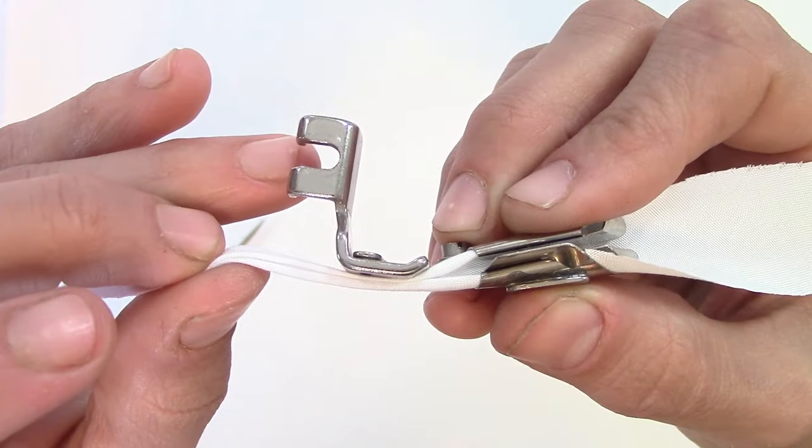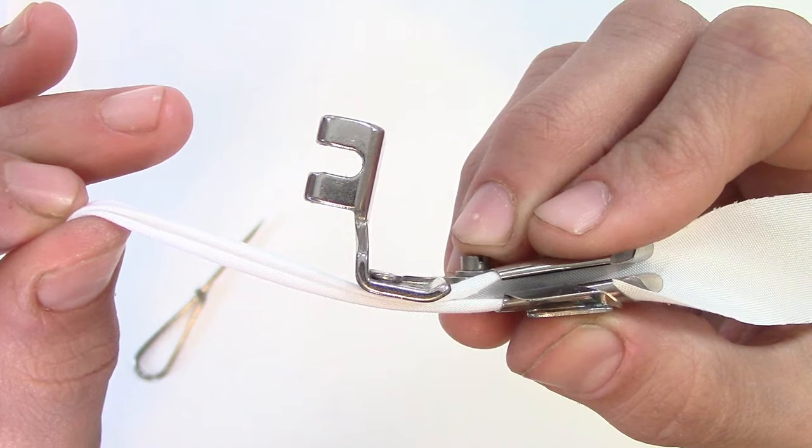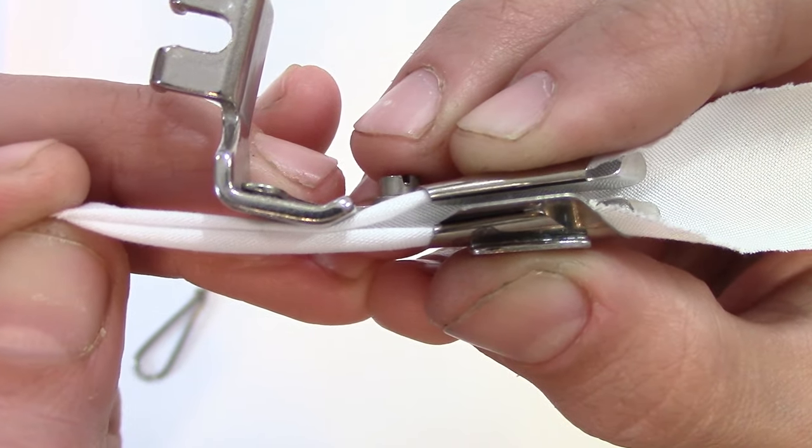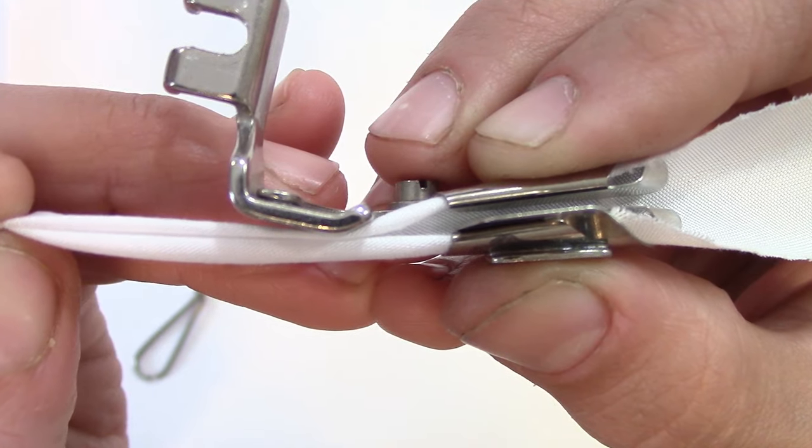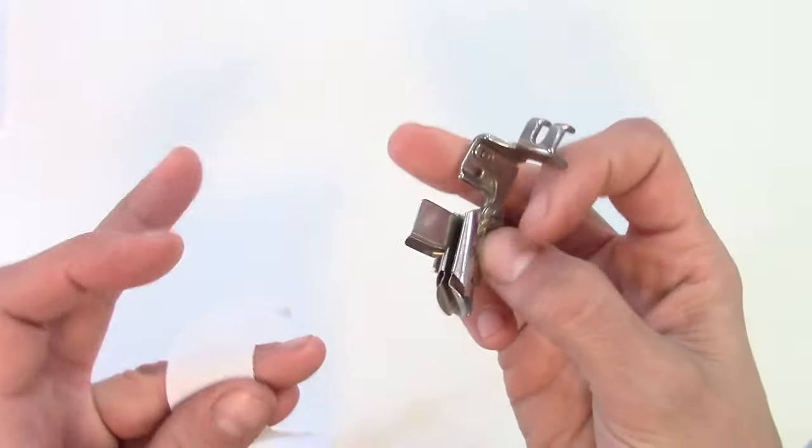The binder accessory had perhaps the most variation of all. Its function is to take a strip of fabric placed around the outside, roll the outer edges into the middle, and then stitch the newly folded edges in place, either on its own as a drawstring or over fabric as binding.